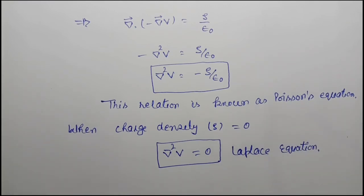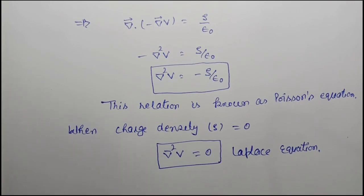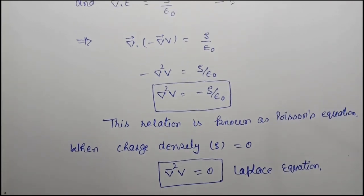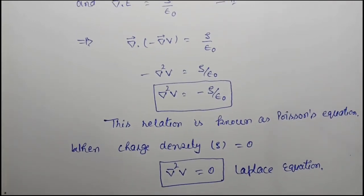So, for Poisson's equation: del squared V equals minus rho over epsilon naught. And for Laplace equation: del squared V equals zero.